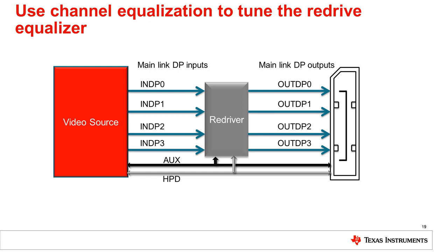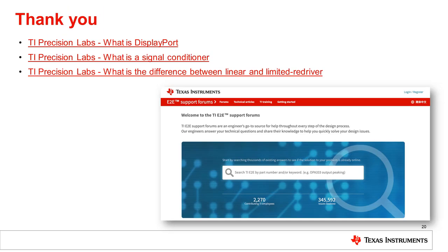Since a signal conditioner helps improve DP main link signal quality, we can use DP link training to help tune the signal conditioner settings. For example, we can tune the signal conditioner setting up and down until link training fails, establishing a lower and upper boundary. By choosing a setting in the middle of the boundary, we ensure the signal conditioner has maximum operating margin. Be sure to visit our E2E support forums at ti.com/e2e. Please also reference previous TIPL videos, like our video on eye diagrams.